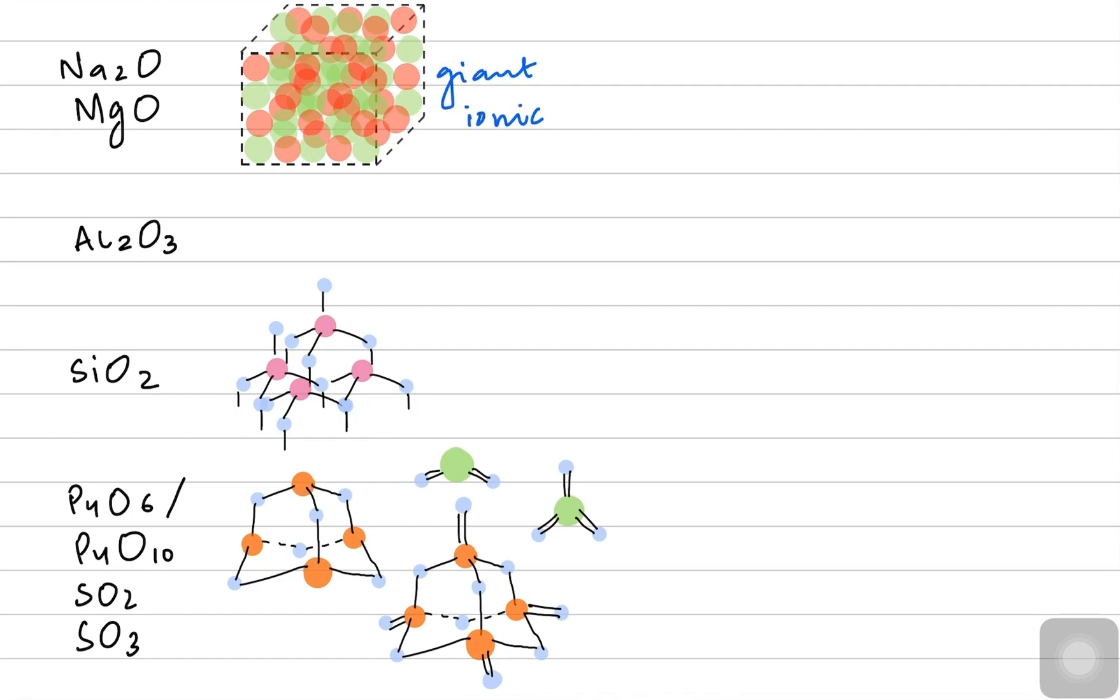Let's label it giant ionic lattice for sodium, magnesium, and aluminum oxide. Giant covalent structure for silicon dioxide. And all of the other oxides here on the screen are simple molecules with covalent bonding. They could ask you that in normal theory questions.